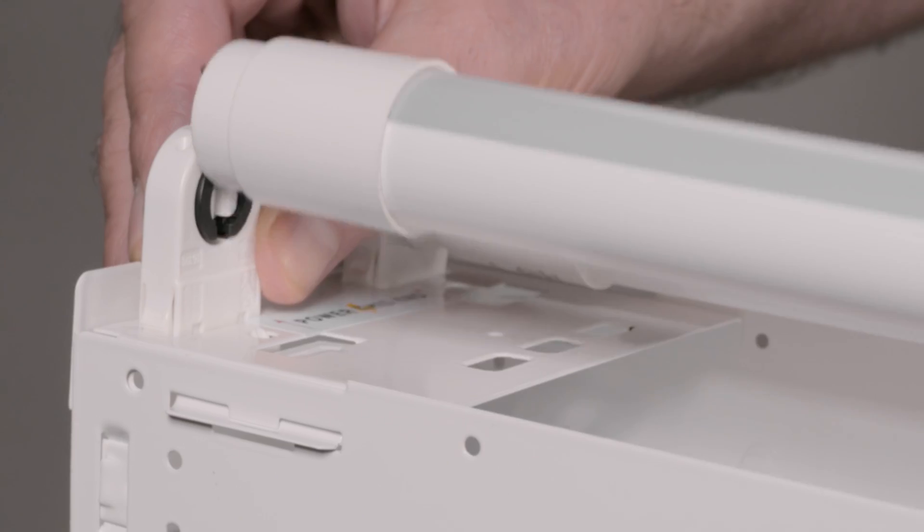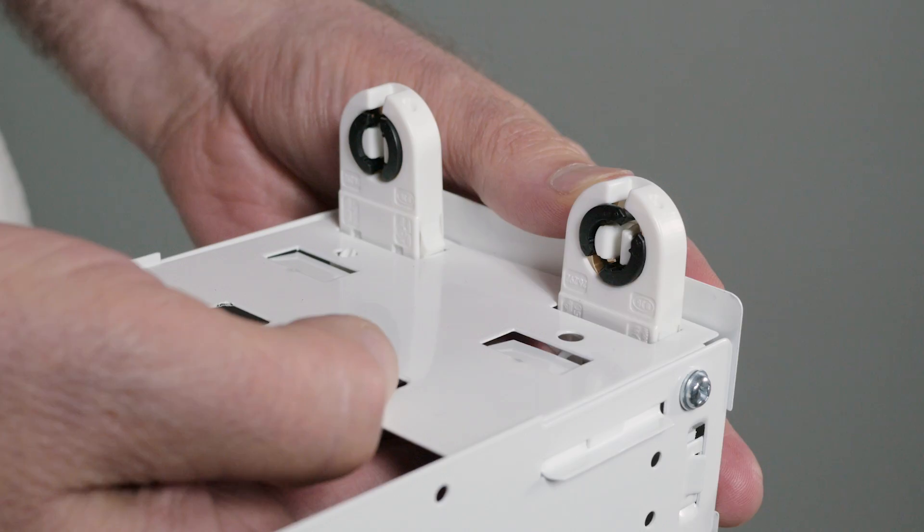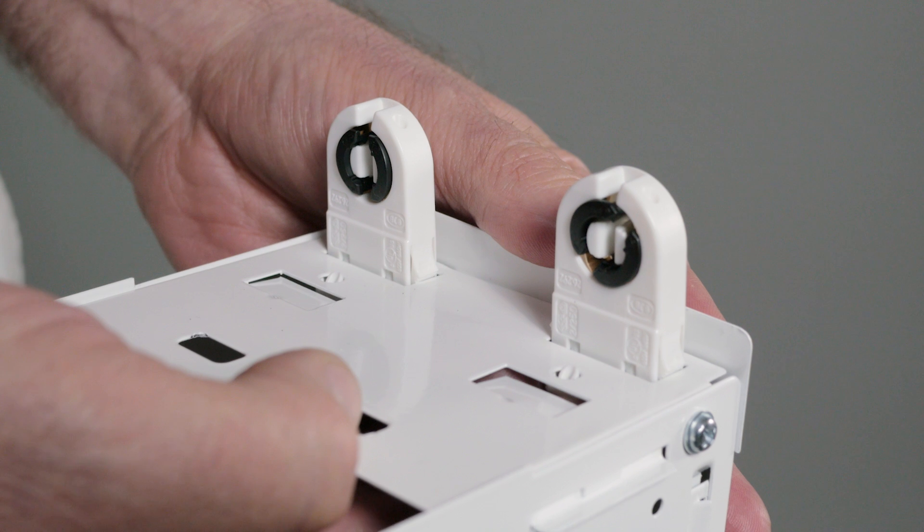Some tubes are simply plug-and-play, while others require the removal of the ballast and changing a socket in your existing fluorescent fixture.